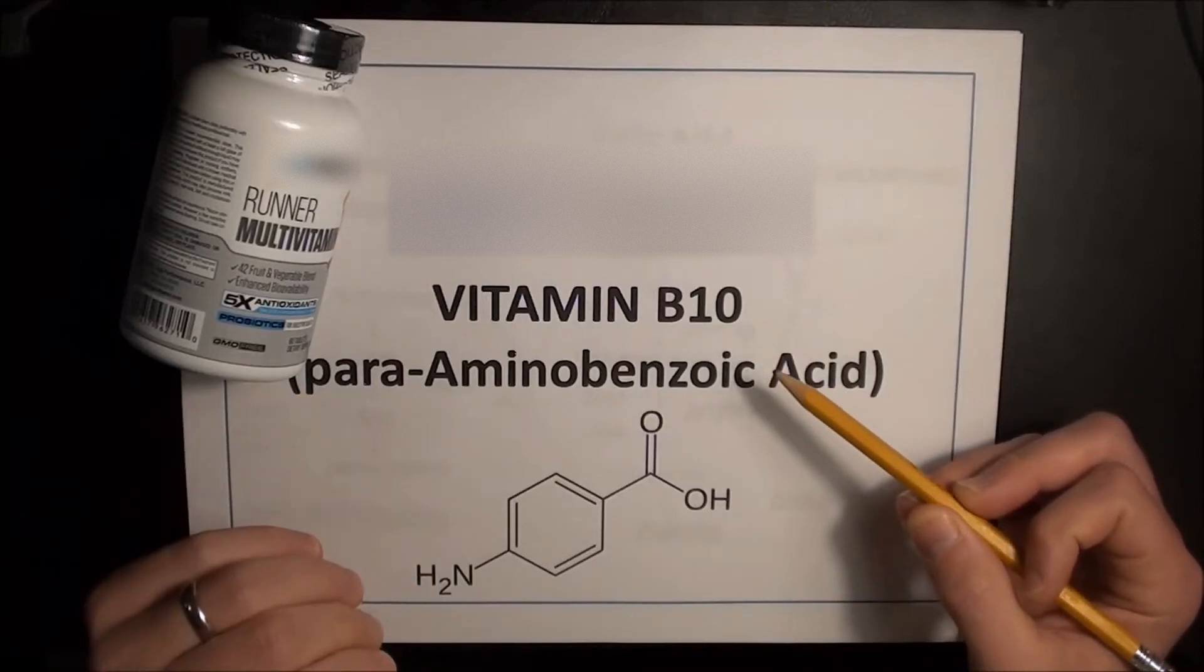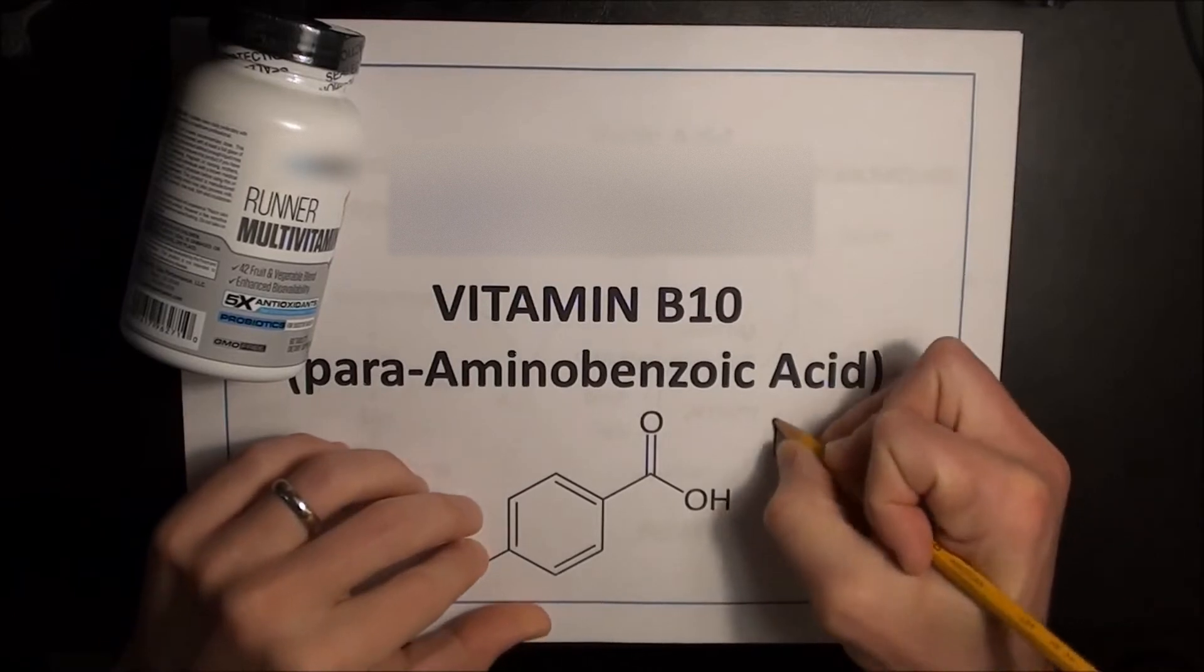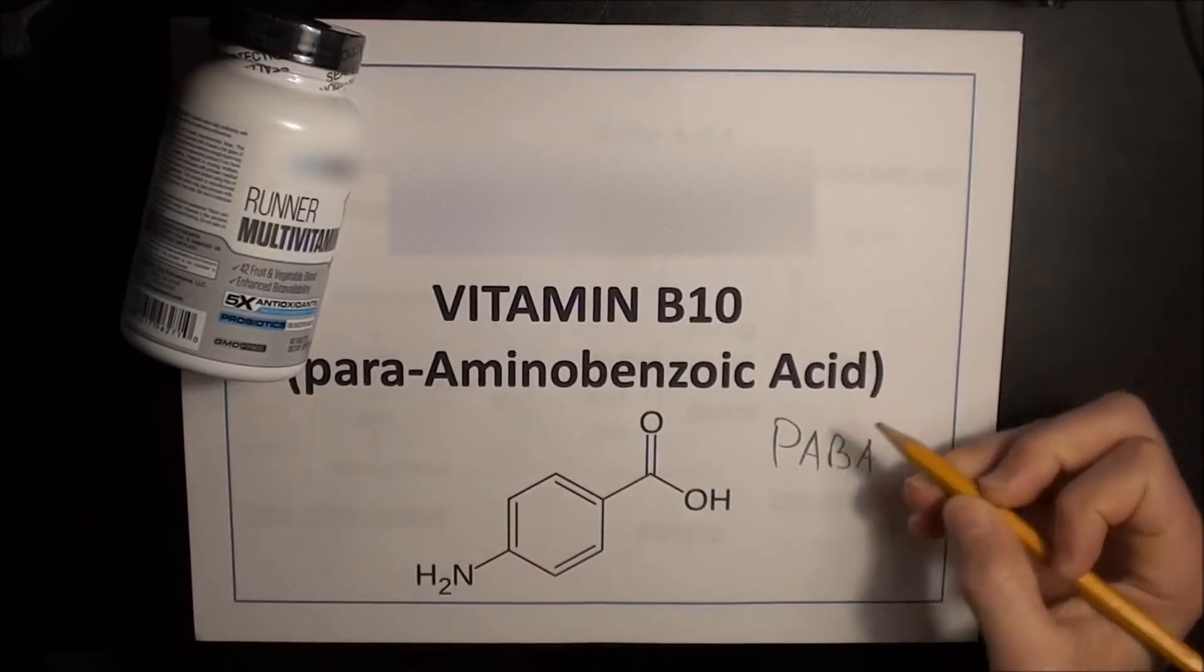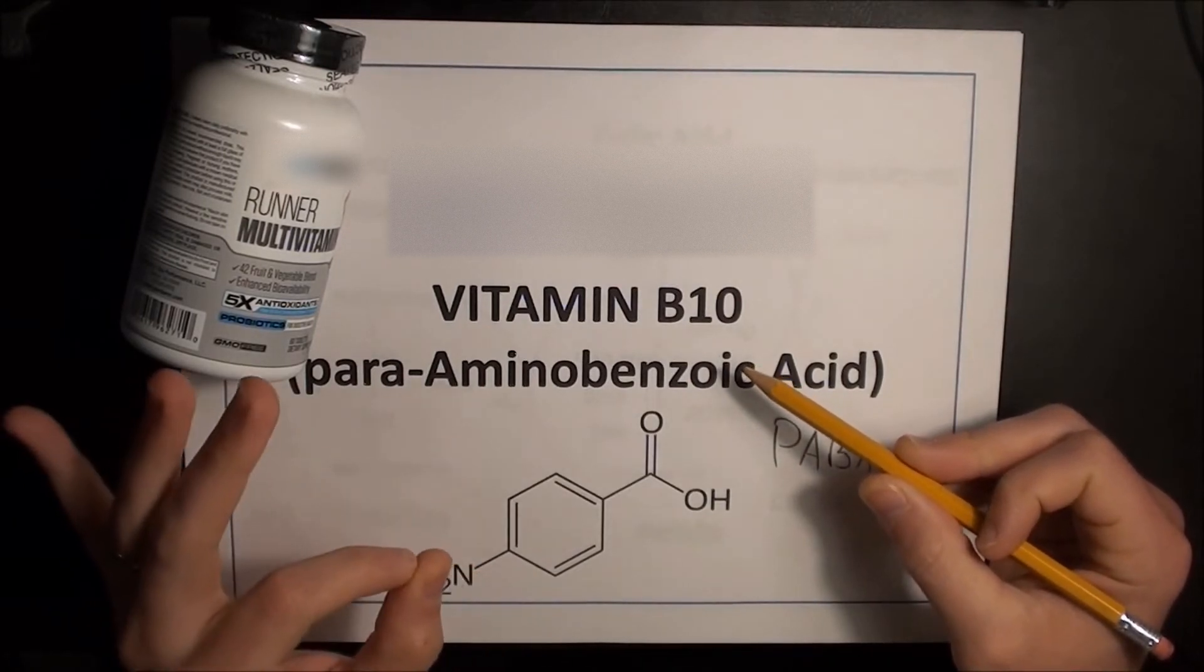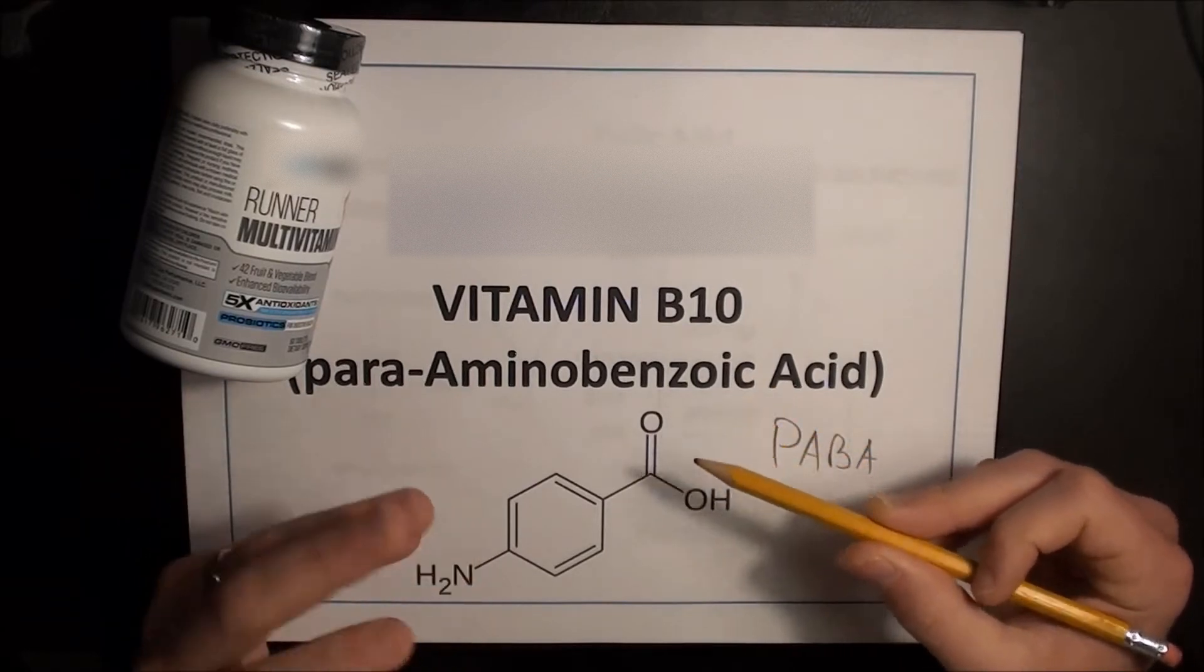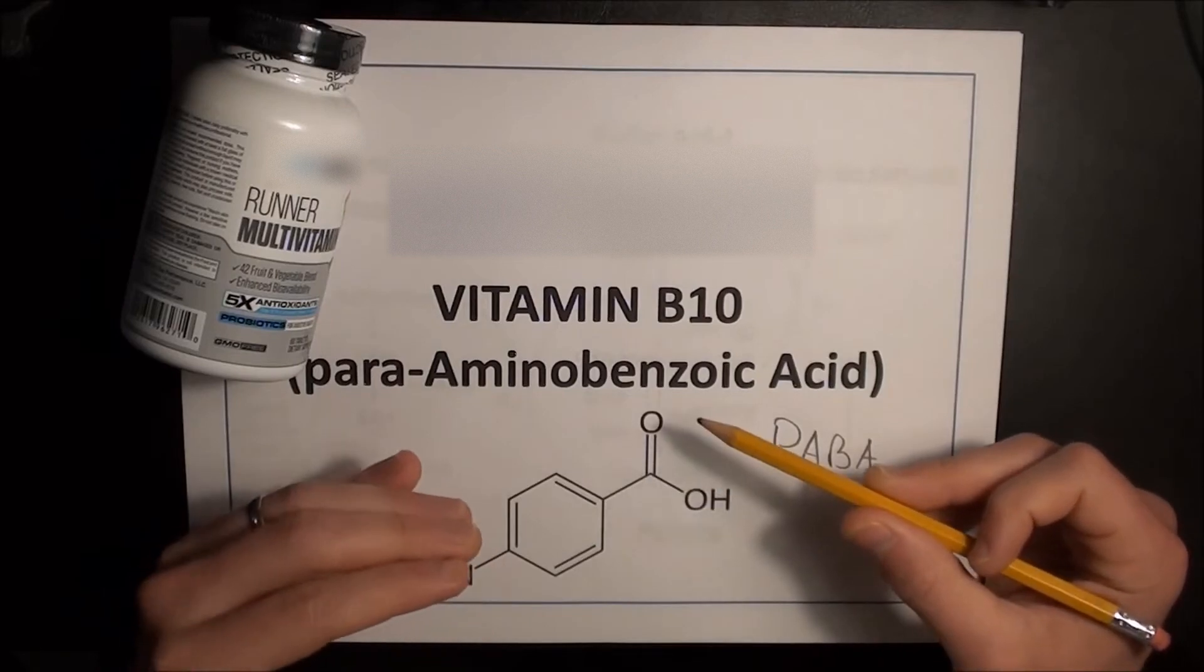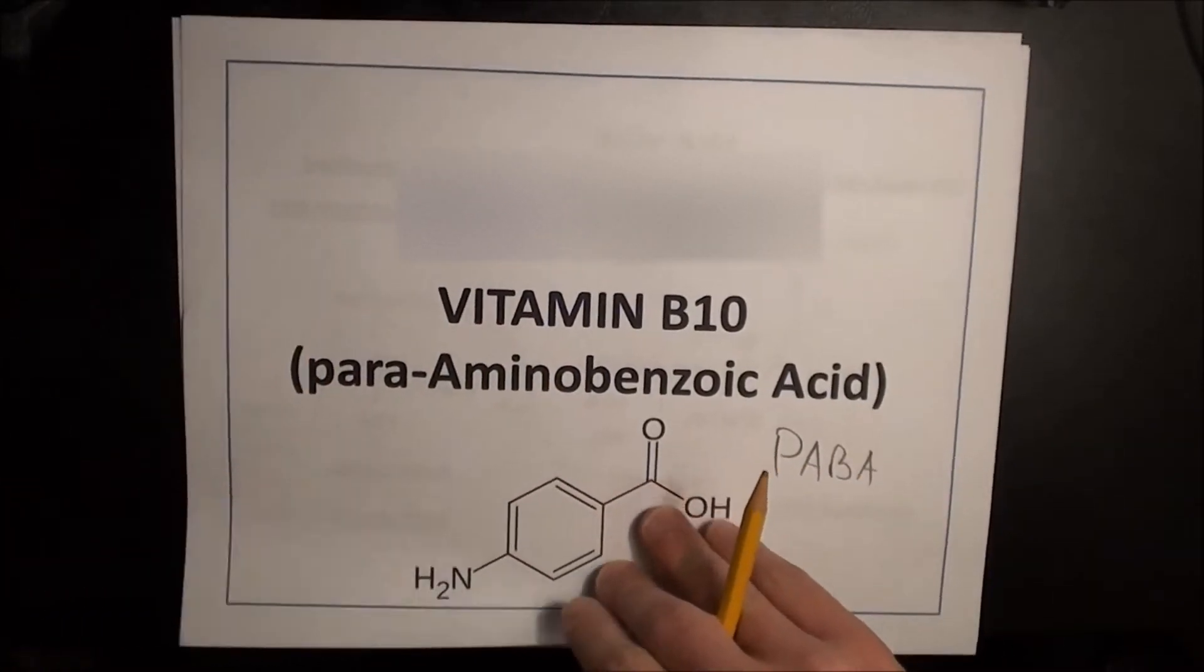Today we are talking about vitamin B10, para-aminobenzoic acid, or PABA for short. And as you will see, PABA is linked to vitamin B9, folic acid, which we explained in the previous video was critical for the production of DNA, especially when it comes to making red blood cells which carry oxygen. So as always, the more you know, the faster you run. Let's take a look.